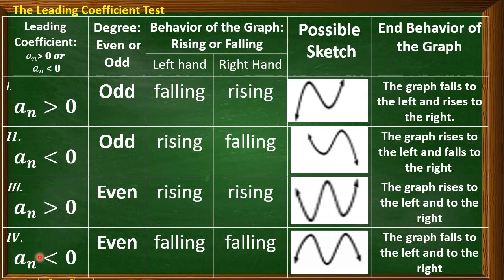Fourth case: the leading coefficient is less than zero and the degree is an even number. The behavior of the graph is falling to the left and falling to the right. In other words, the graph falls to the left and to the right.